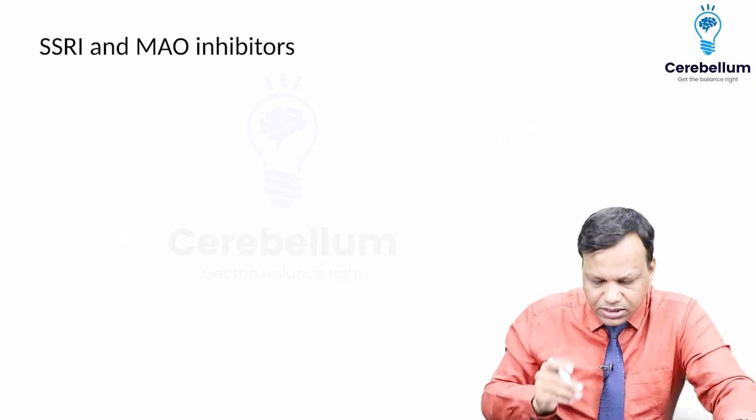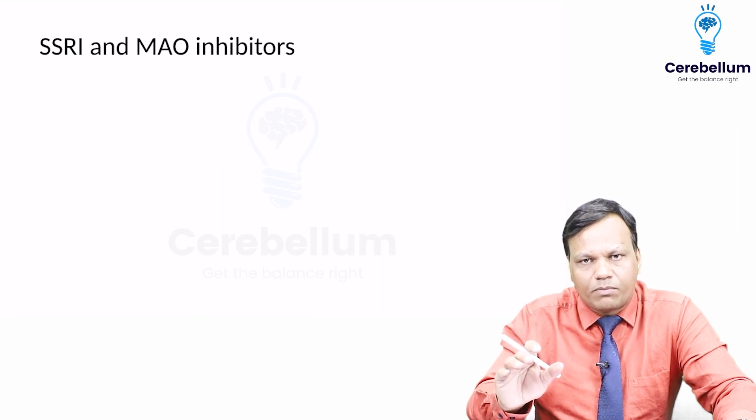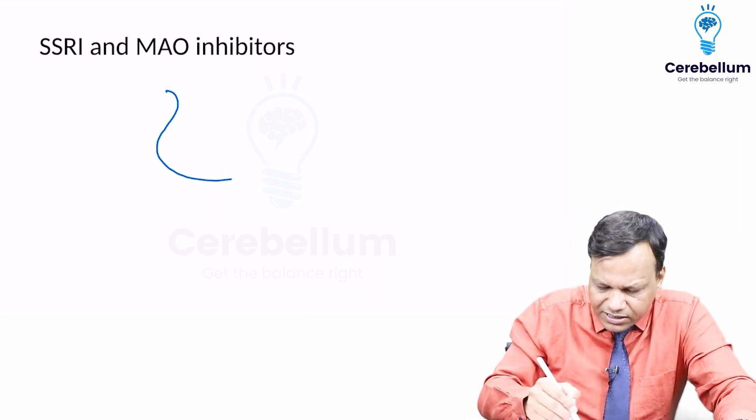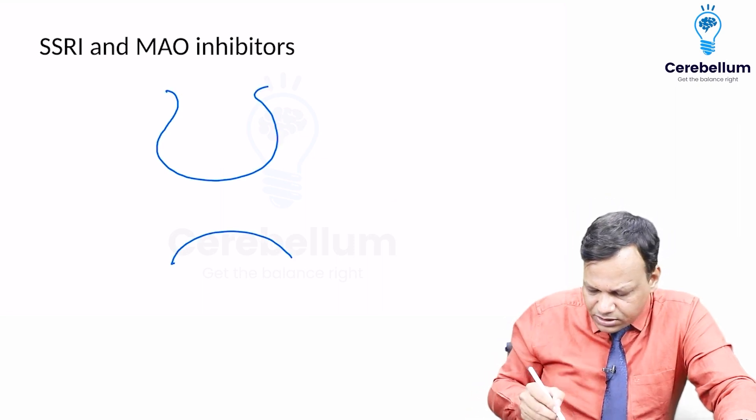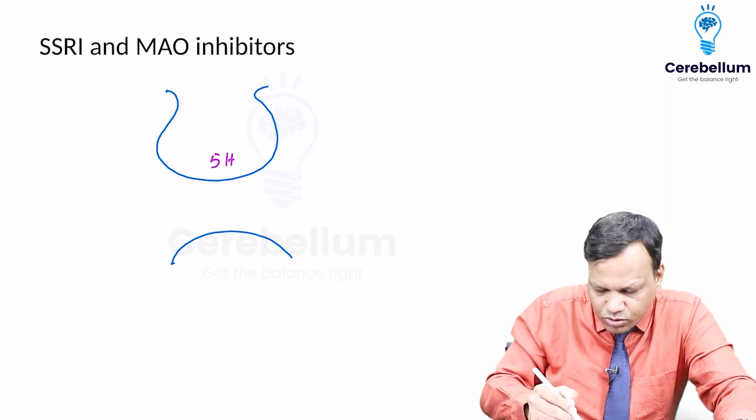Next interaction is SSRI and MAO inhibitors. SSRI, as the name says, works with serotonin. Serotonin is produced and stored here.